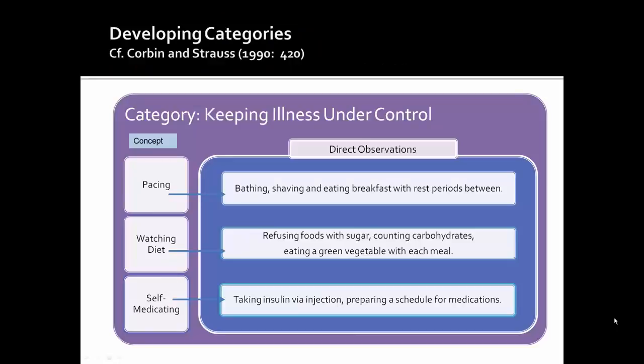This is an example of the development of categories, one that you can find in the article by Corbin and Strauss. The category is keeping illness under control. The direct observations — bathing, shaving, and eating breakfast with rest periods in between — inform the development of the concept pacing. Pacing, watching diet, and self-medicating are all concepts that come under the category of keeping illness under control.